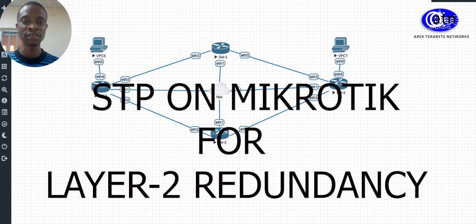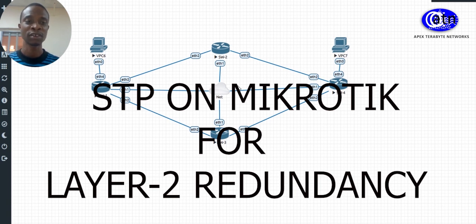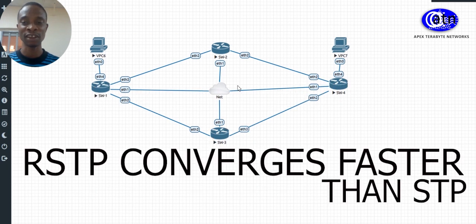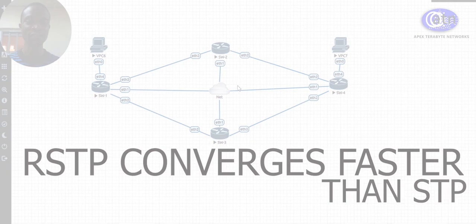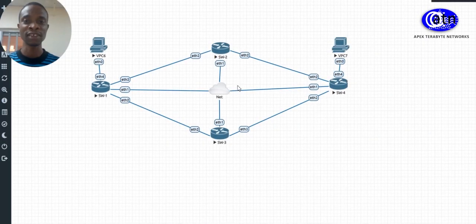On MikroTik, it is applicable and the advanced feature, which is Rapid Spanning Tree Protocol, is also available on MikroTik. The difference between Rapid and standard Spanning Tree Protocol is the convergence time. RSTP converges faster than STP, and also differs in the states of the ports.